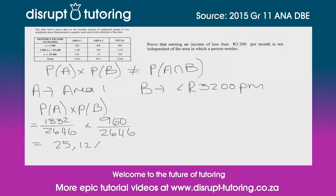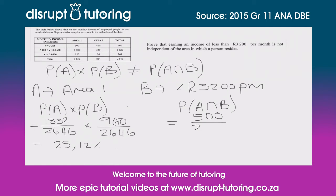We've done the left-hand side, so let's move on to the right-hand side. Now we're going to do the probability of A intersection B. From our table we can see that living in Area 1 and earning less than 3200, there are 500 people that fall into that bracket, so it would be 500 over 2646. Once we plug that into our calculator we get 18.90%.